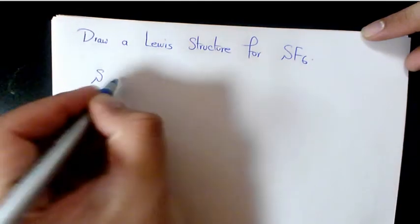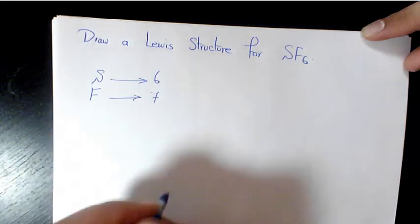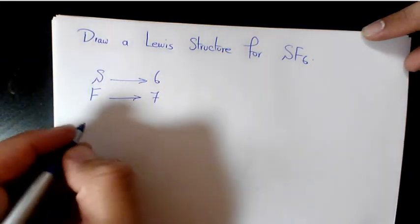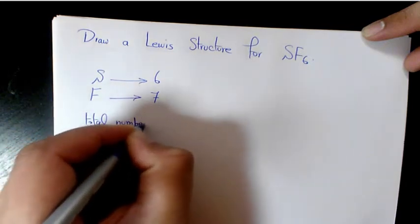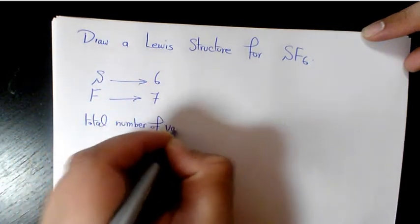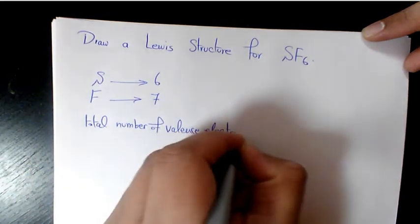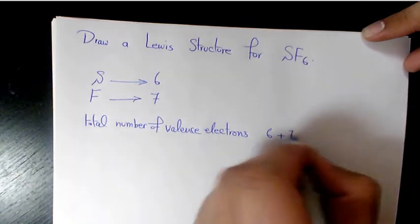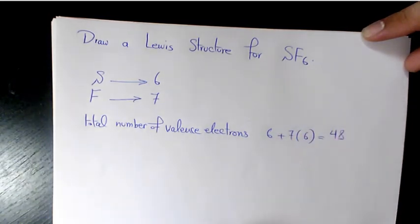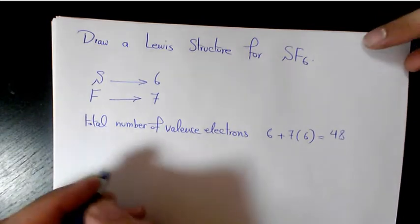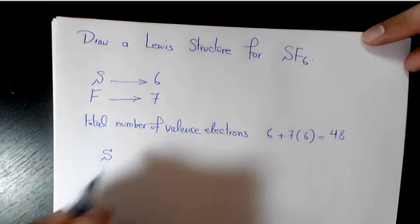So sulfur has 6 valence electrons, fluorine has 7 valence electrons. We need to find out the total number of valence electrons. It's going to be 6 plus 7 times 6, that's going to be 48 electrons.